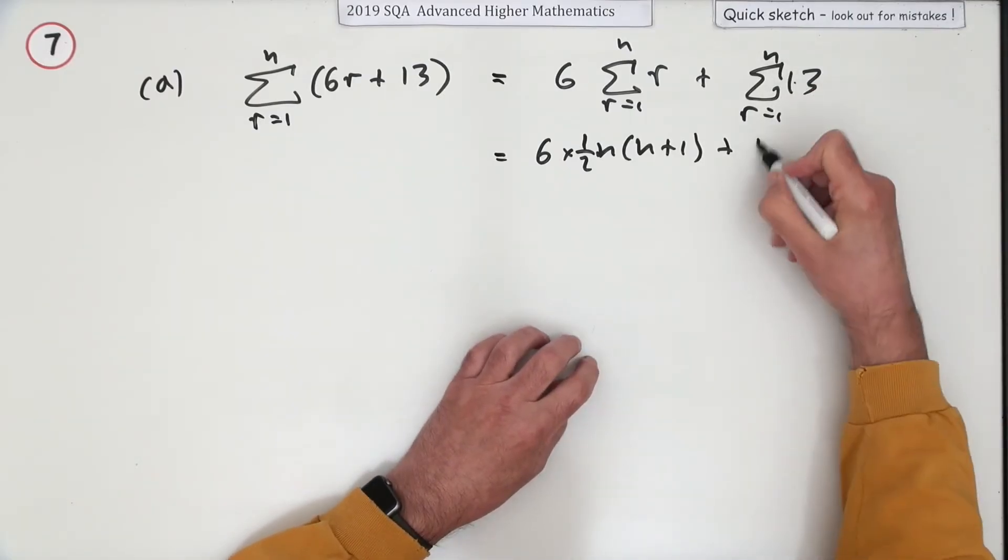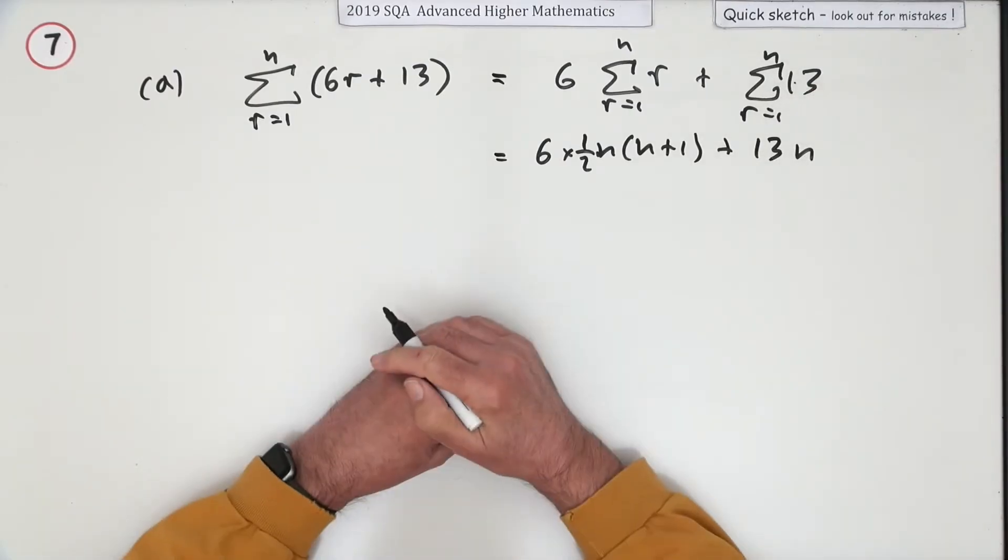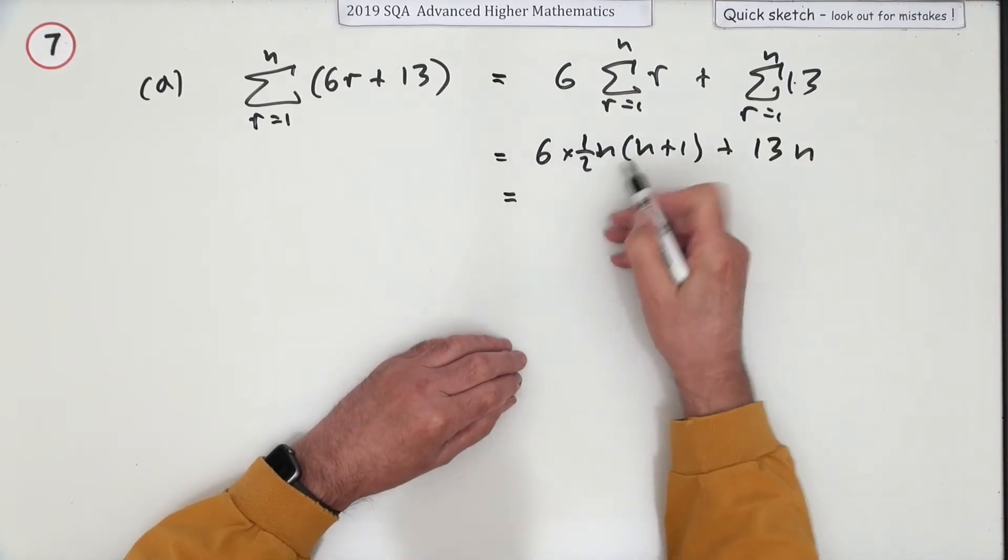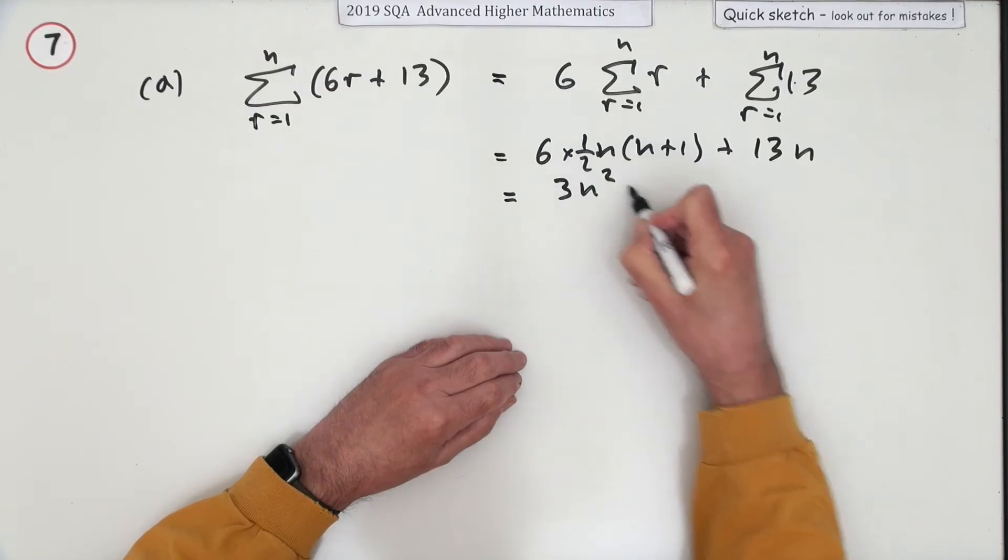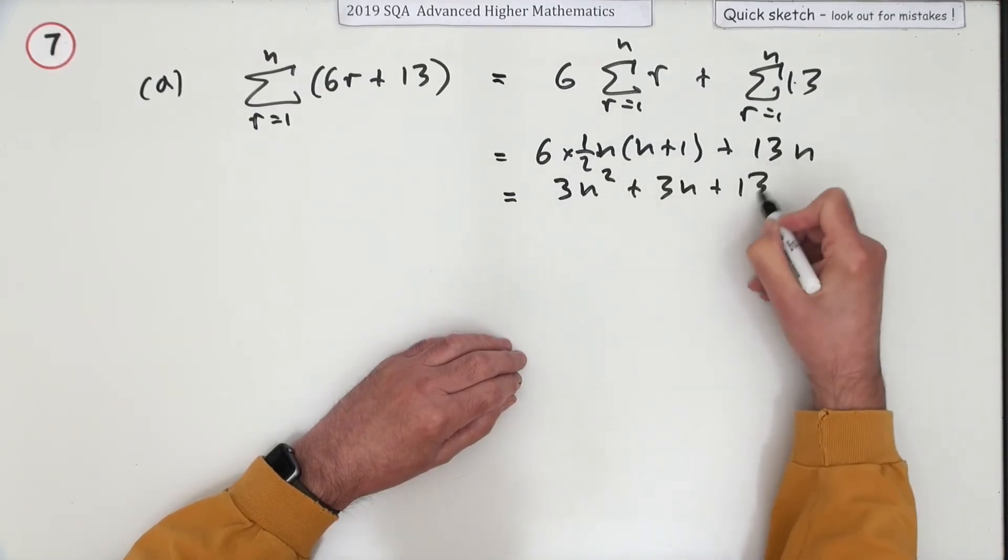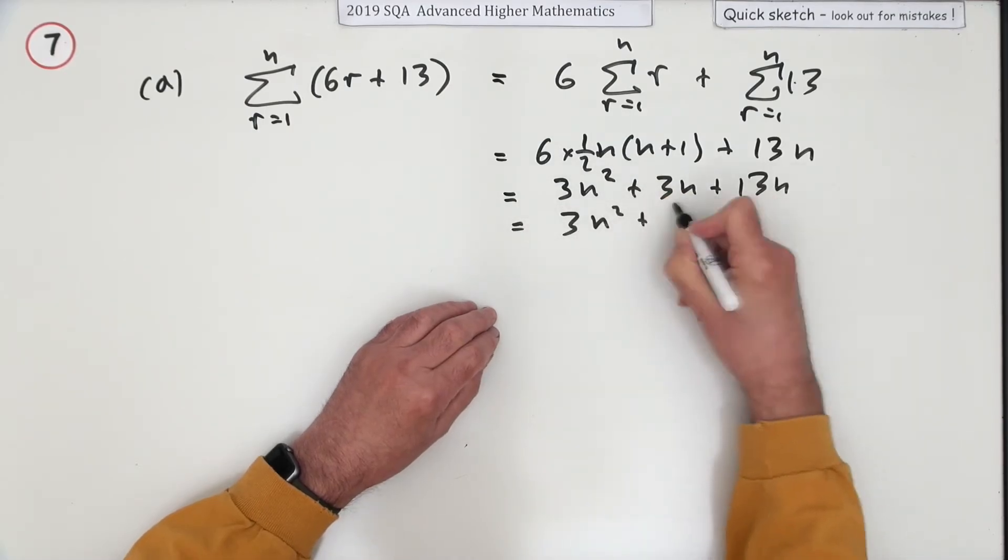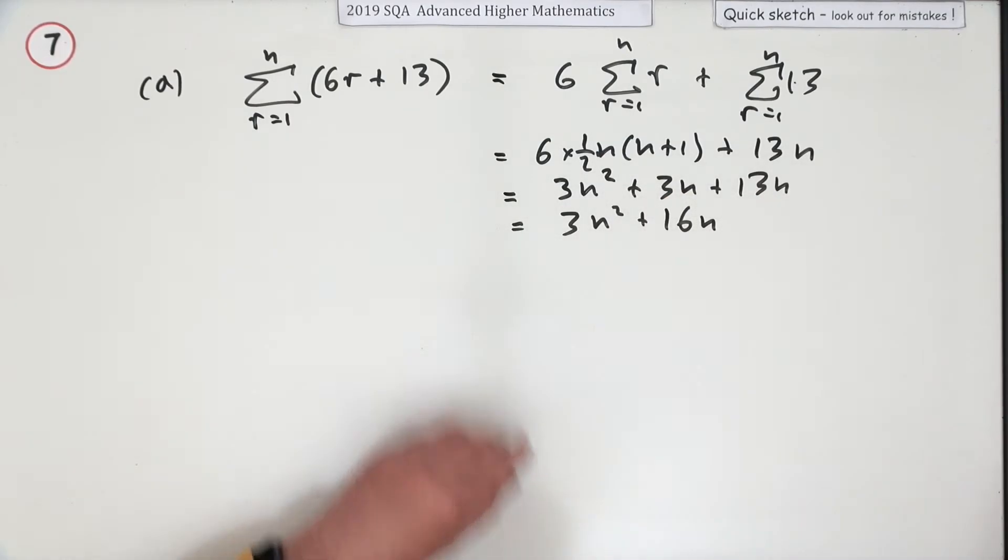So it's 3n times that bracket, so it's 3n squared plus 3n plus 13n, which comes to 3n squared plus 16n.